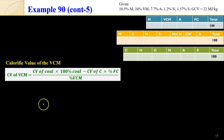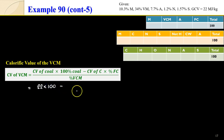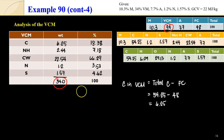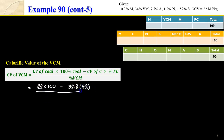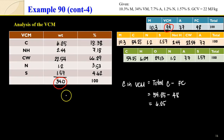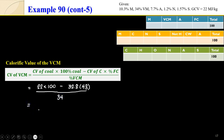To solve for the calorific value of the volatile combustible matter: CV of coal times 100 kg of coal minus CV of carbon times percentage fixed carbon, all divided by the percentage of VCM. CV of coal is 22 MJ/kg, CV of carbon is 32.8 MJ/kg times fixed carbon of 48, divided by VCM of 34. This gives us 18.4 megajoules per kilogram.